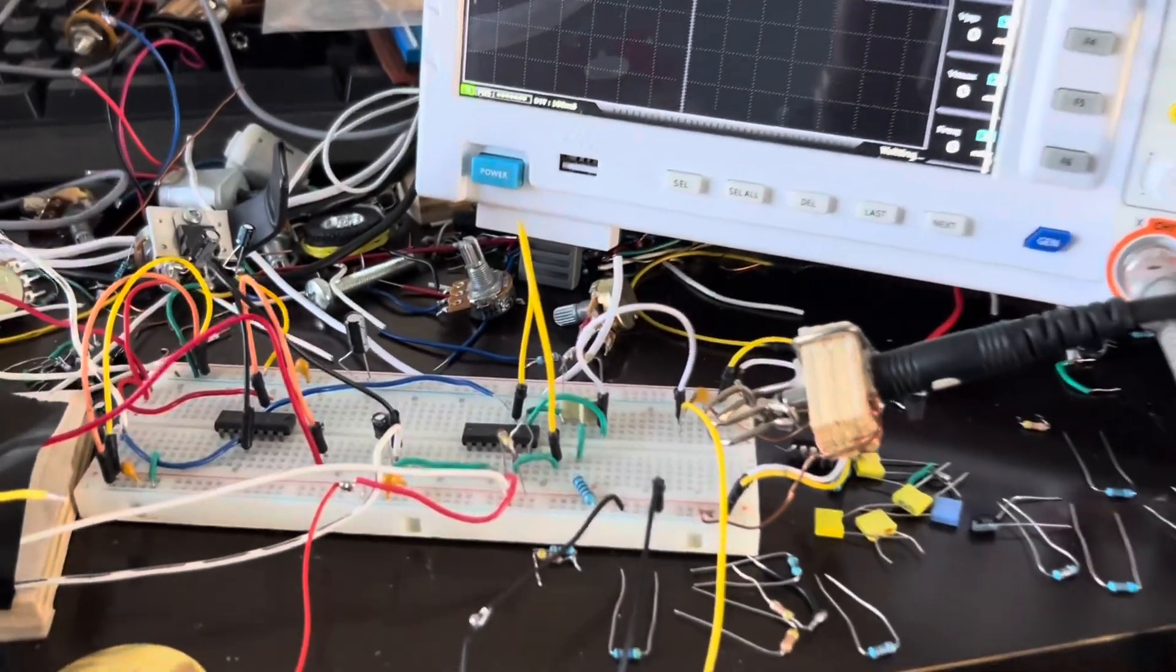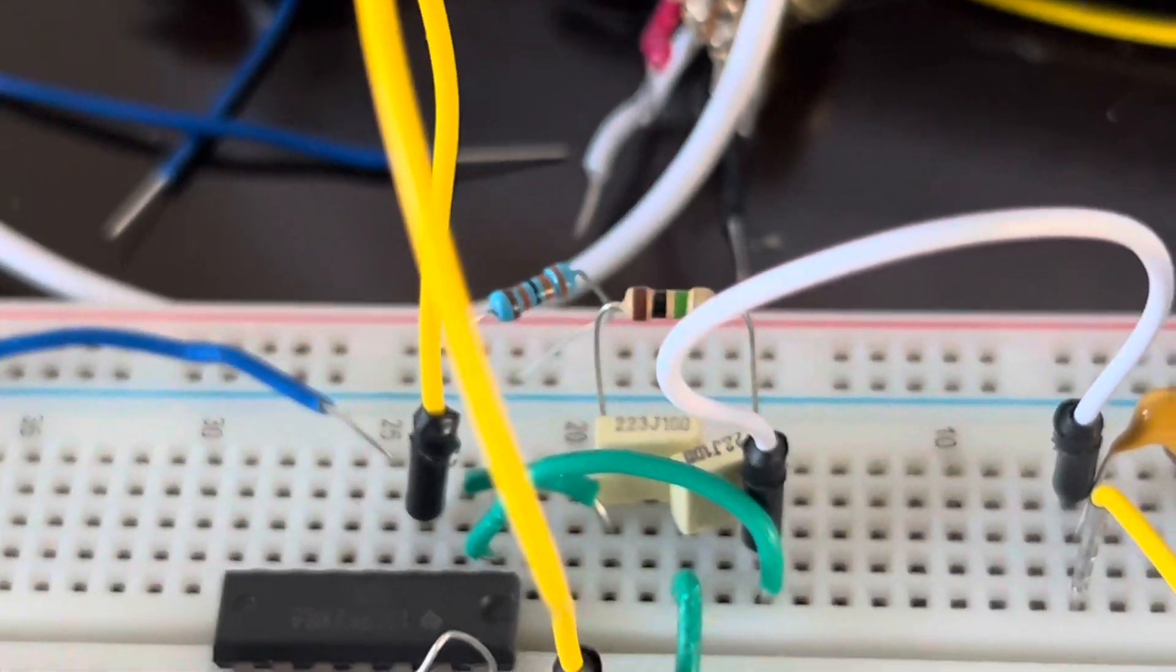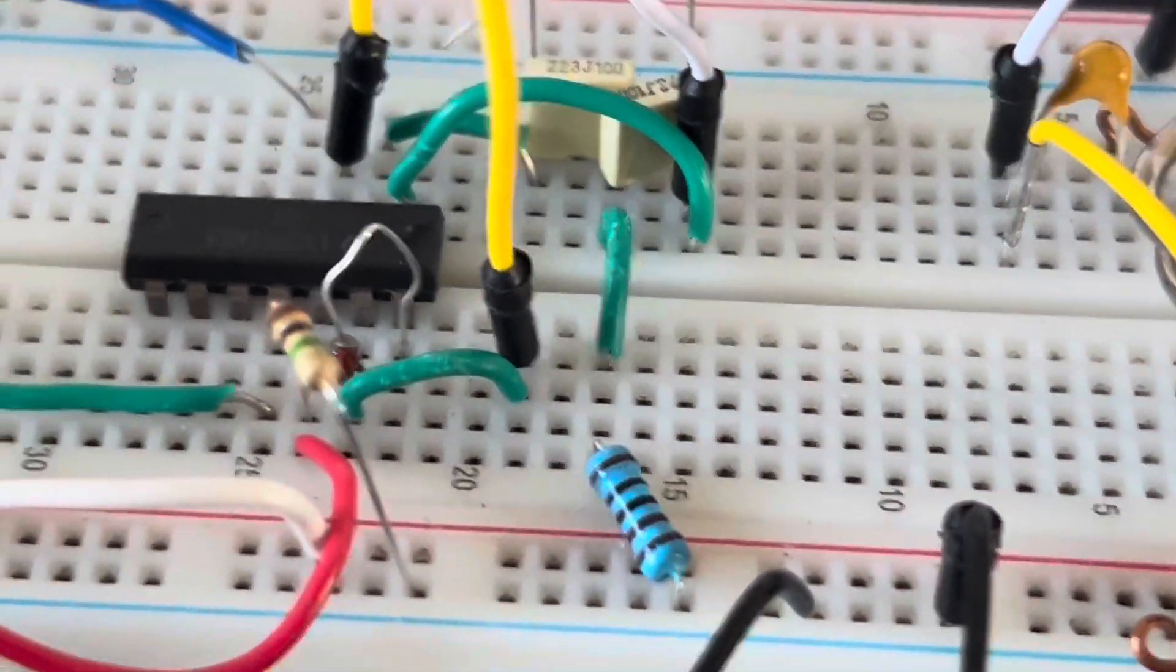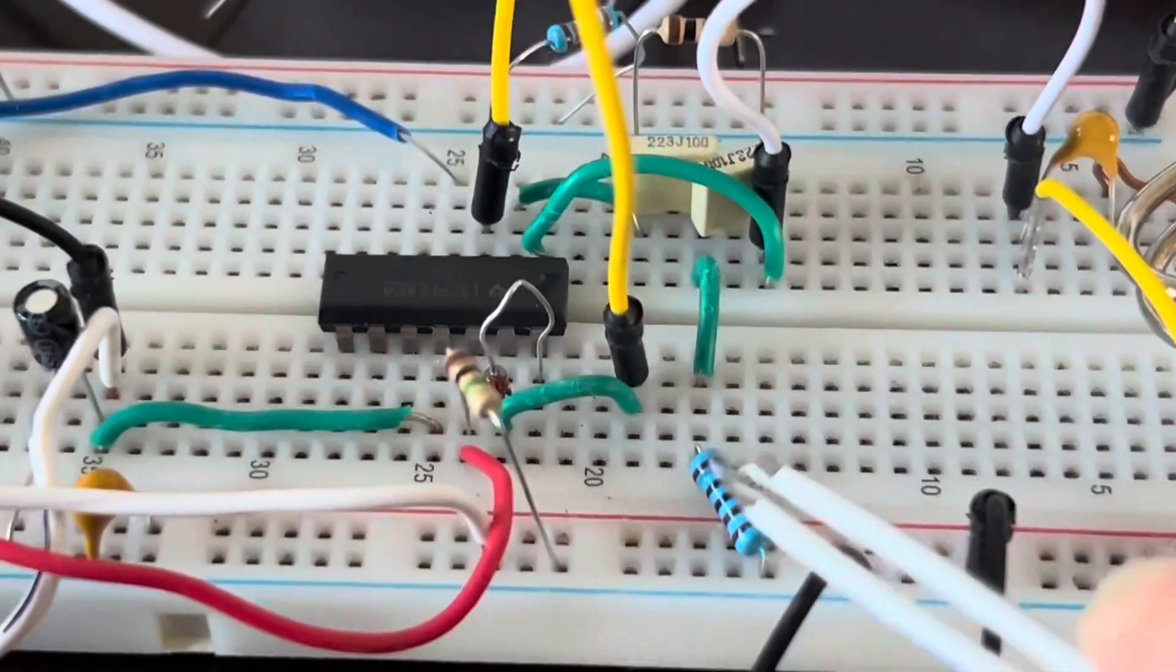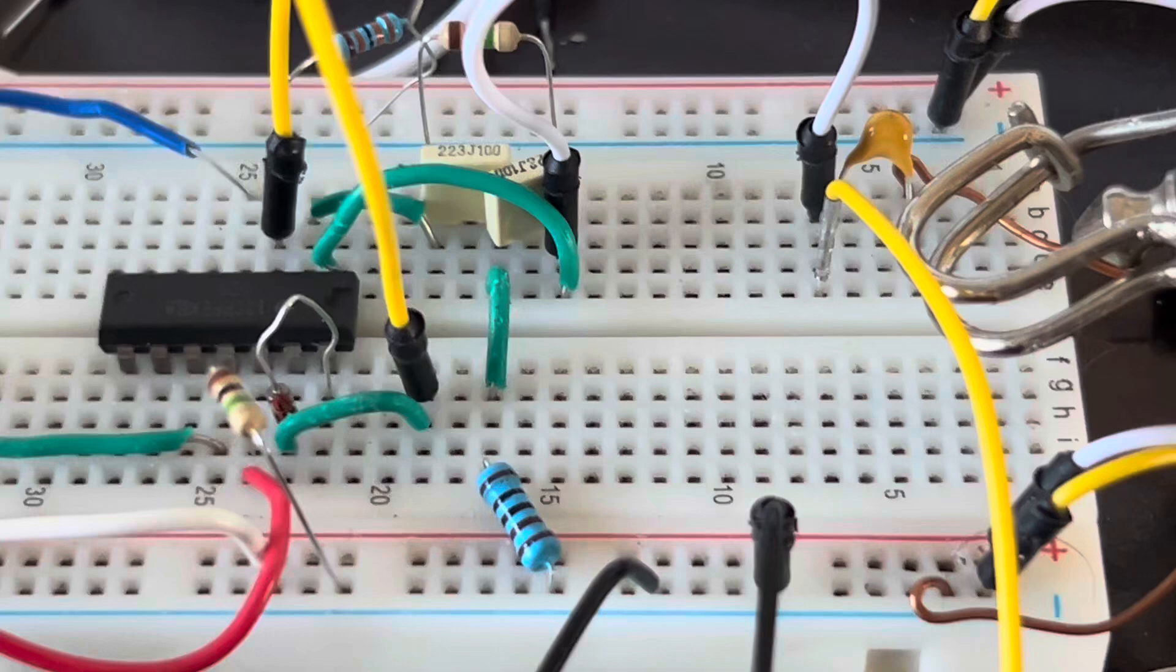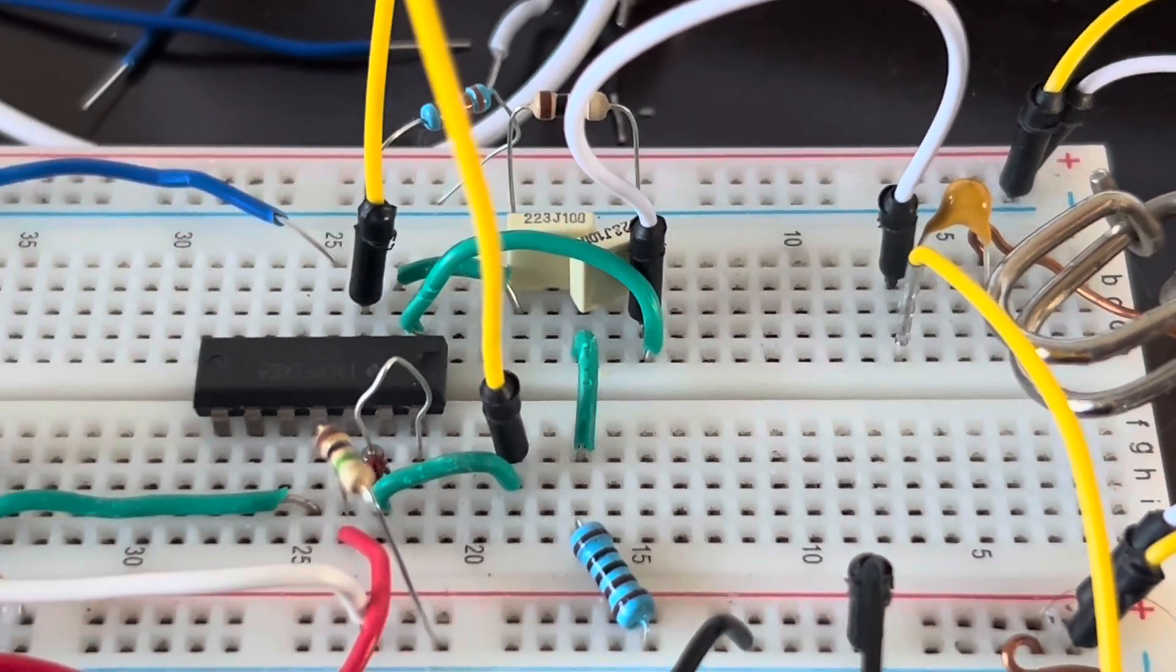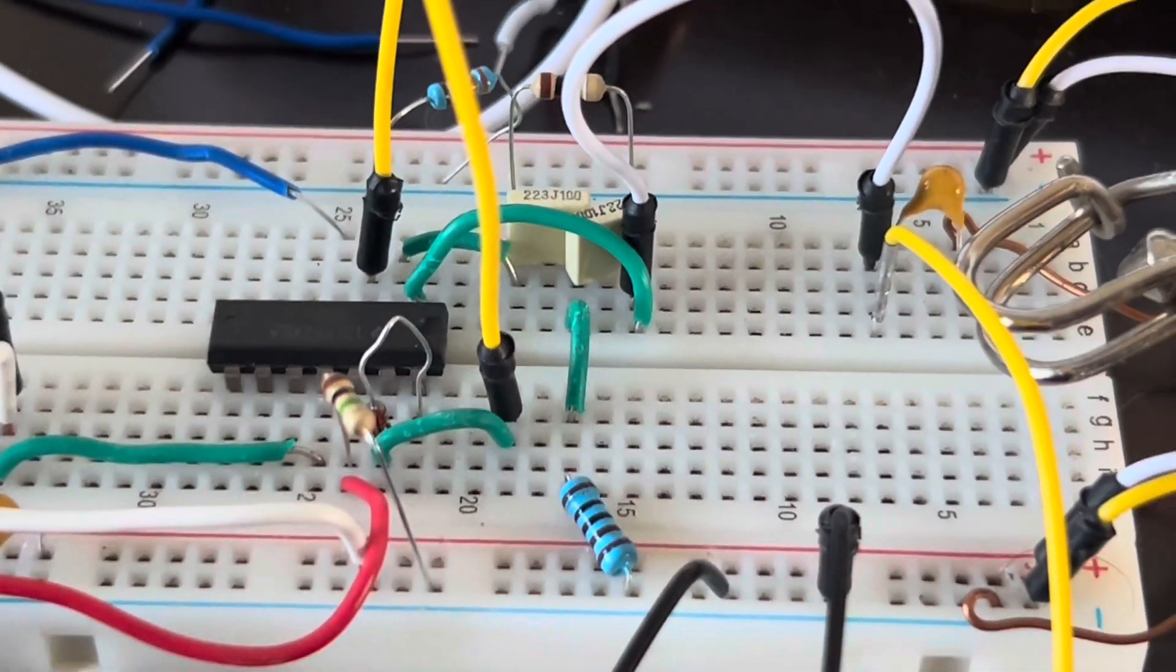So how do we change that? We have to change one of the components in the bridge T-network. And so the easiest component to change is that 1K resistor down here at the bottom. And this 1K resistor, if we change it and make it a little bit larger, the frequency at which we're going to generate the kick drum sound is going to lower and become more of a kick drum and less bongo-y. So let's try that.